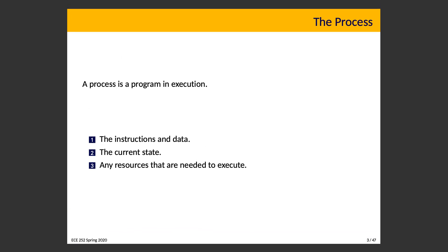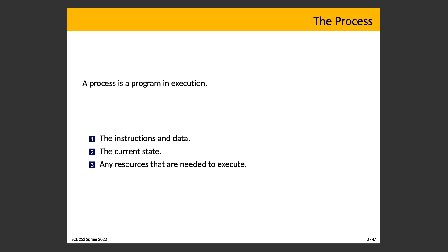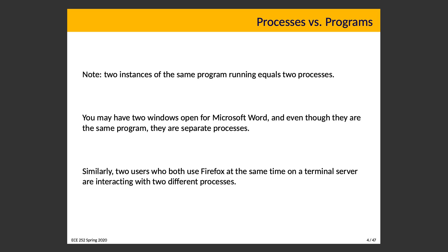The second component is the current state — that is, where we are in execution of this process — and any resources that are needed to execute. That's files, that's memory, that's anything that counts as a resource that is open or in use during execution. If we have two instances of the same program running, those are two distinct processes. You can have two windows open for Microsoft Word — it's the same executable file, word.exe or equivalent — but they are considered different processes because they are at different points in their execution, managed separately by the operating system. They share the executable program, but that's only one part of the process.